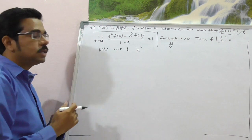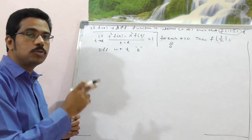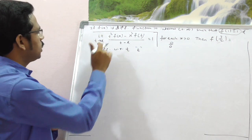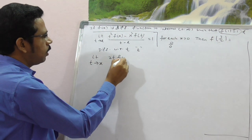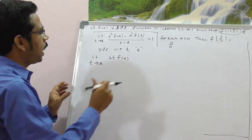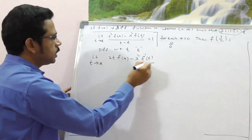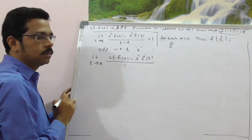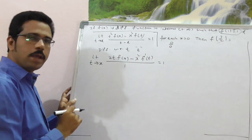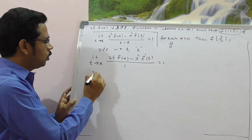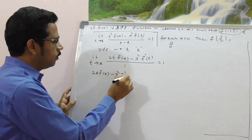Since this is a limit as t tends to x, we differentiate with respect to t, not with respect to x. Differentiating the numerator: d/dt[t²·f(x)] = 2t·f(x), since f(x) is constant w.r.t. t. Minus x²·f'(t). The denominator differentiates to 1. So the limit becomes: 2t·f(x) − x²·f'(t), evaluated at t = x, equals 1.